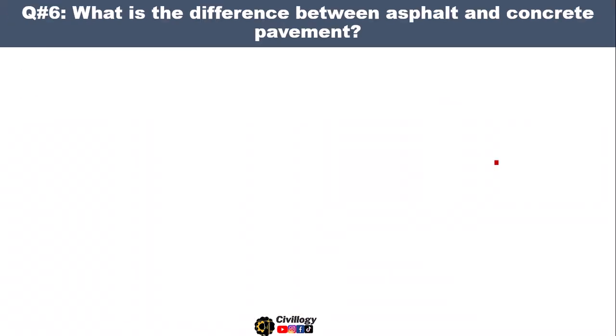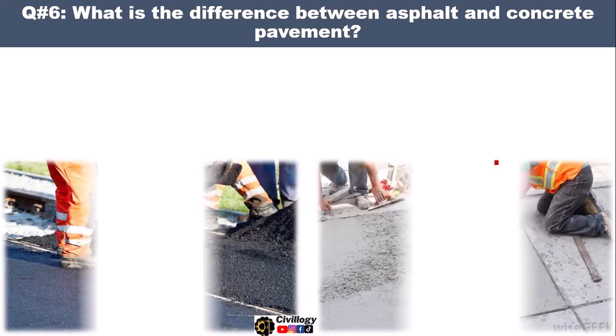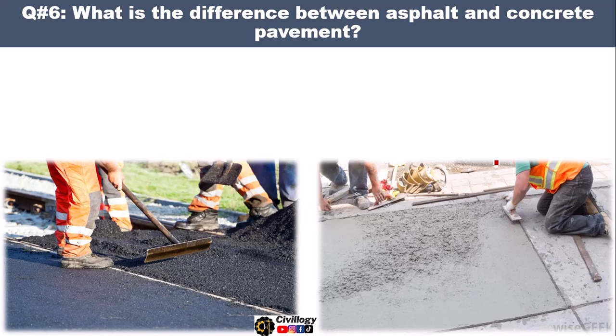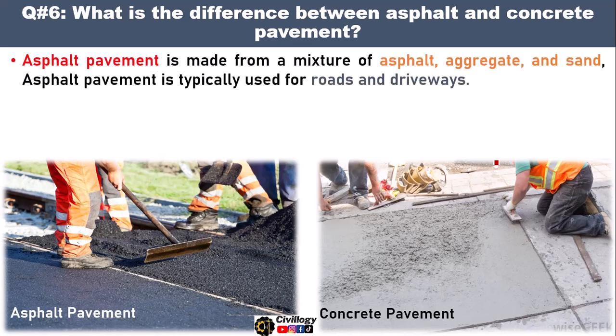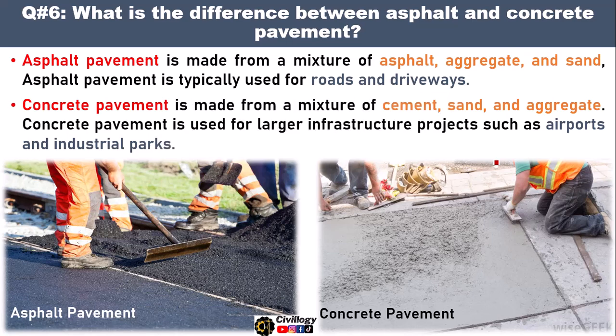Question number six, very important for fresher engineers: what is the difference between asphalt and concrete pavement? Asphalt pavement is made from a mixture of asphalt, aggregate, and sand, and is typically used for roads and driveways. Whereas concrete pavement is made from a mixture of cement, sand, and aggregate, and is used for large infrastructure projects such as airports and industrial parks. The main difference is that asphalt uses asphalt as a binding agent whereas concrete pavement uses cement.